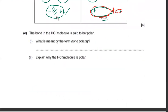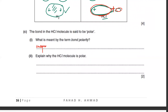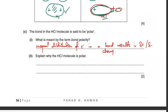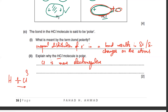Bond polarity means the unequal distribution of electrons in a bond, which results in slight positive and slight negative charges on the atoms. HCl is polar because Cl is more electronegative, so the shared electrons are closer to Cl, giving Cl a slight negative charge and H a slight positive charge.